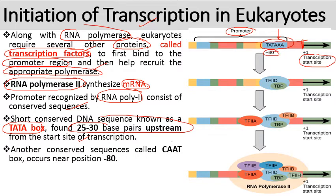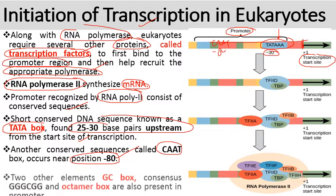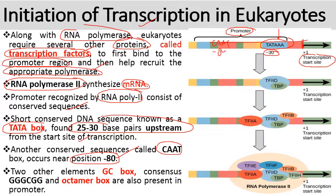Another conserved sequence called the CAAT box occurs near the position of minus 80, that is 80 base pairs upstream. There are also two other elements: the GC box consensus, which contains guanine-rich sequences, and the octamer box — all present in the promoter region of eukaryotes.